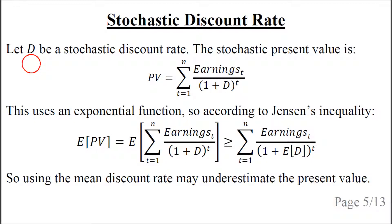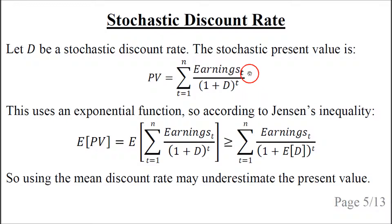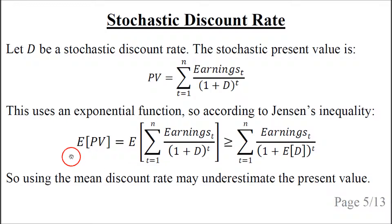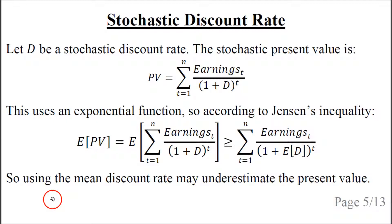Now let capital D be a stochastic discount rate. The stochastic present value is denoted PV, and it equals the same sum as before but using a stochastic discount rate instead of the deterministic discount rate. This is an exponential function — separating it, we get 1 divided by 1 plus D, raised to the power of T. So we can apply Jensen's inequality: the mean present value is greater than or equal to the same expression calculated with the mean discount rate. This means that if we use a mean or average discount rate, we may underestimate the present value.